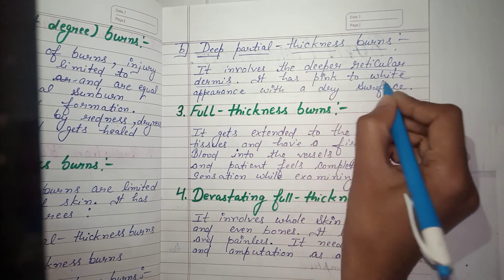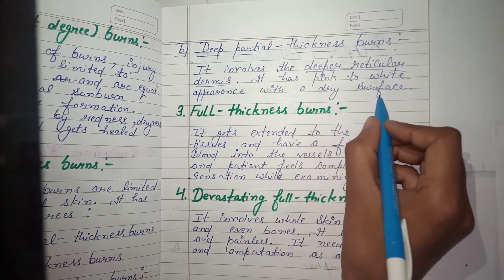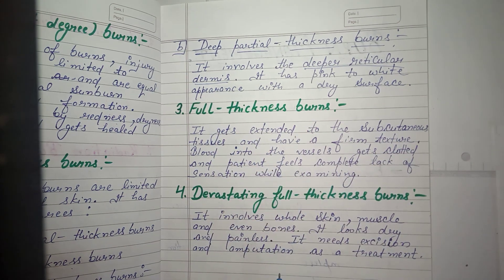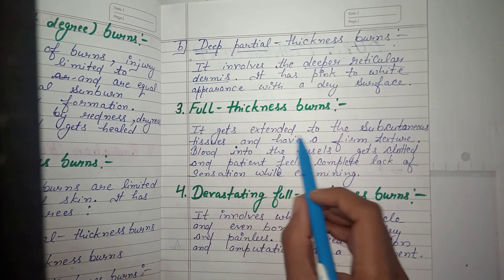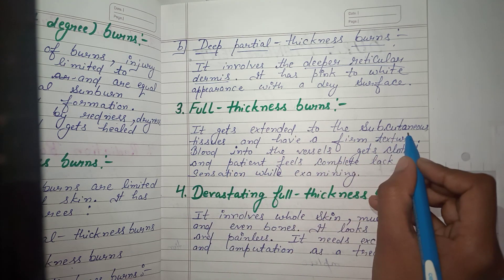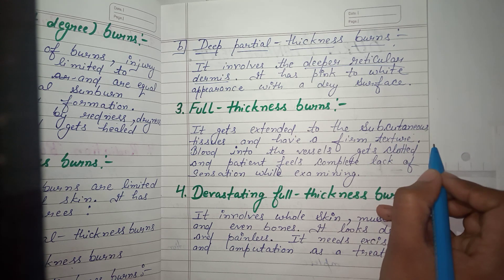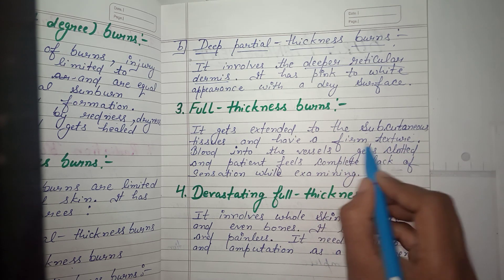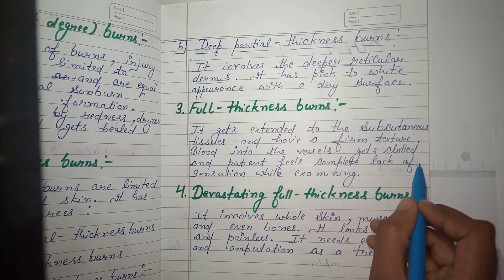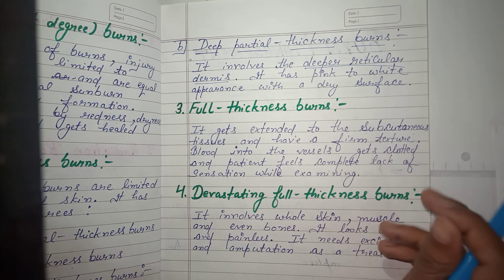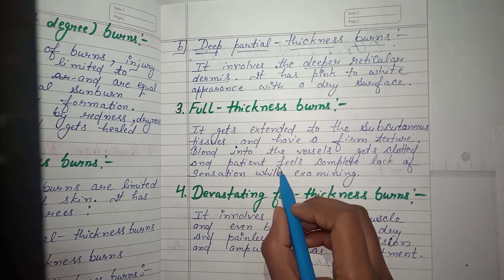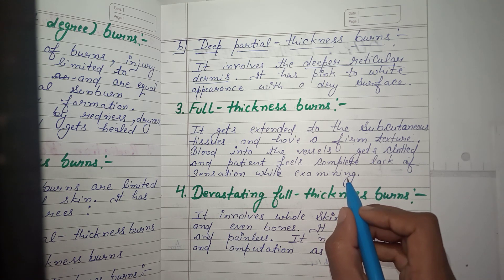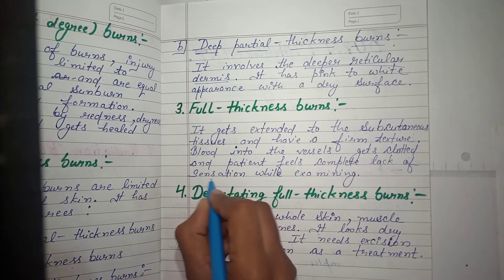Full thickness burn extends to the subcutaneous tissue — the third layer of skin. It has a firm texture, meaning the skin becomes hard. Blood in the vessels gets clotted. The patient feels a complete lack of sensation, meaning there is no sensation in the skin when examined.